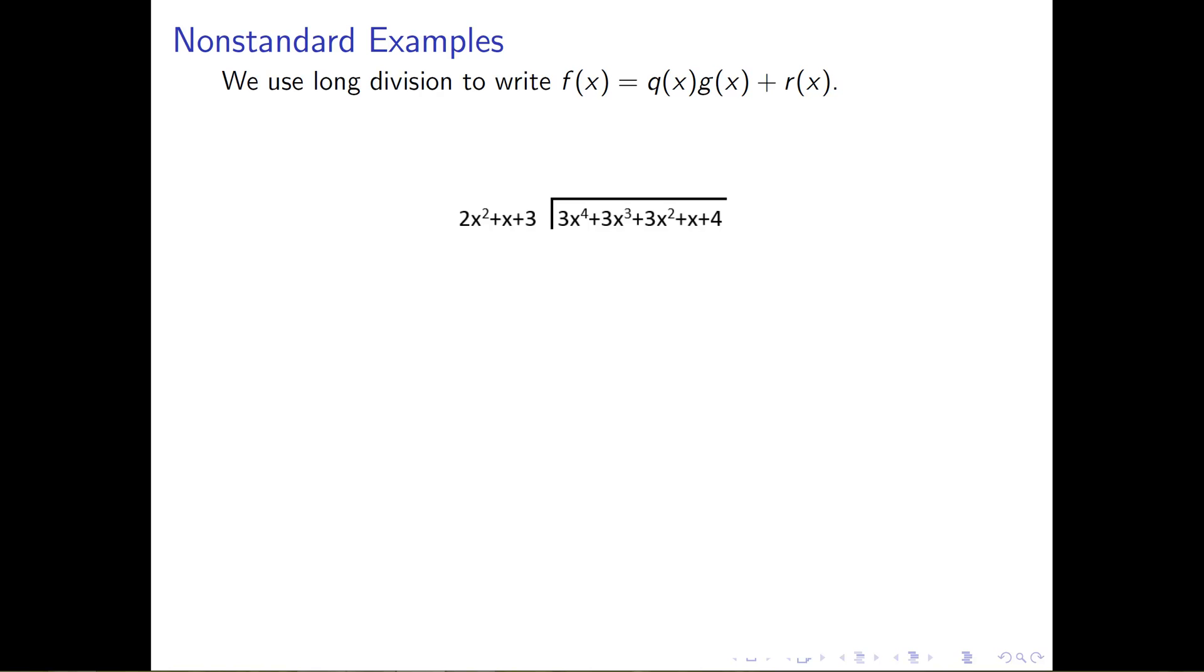Next, what I'd like to do is I'd like to use long division to write f(x) as q(x)g(x) + r(x). And in this example, instead of first doing the whole long division using real numbers and then later converting all of the coefficients in my result to Z mod 5, what I'm going to do is I'm going to do all of my computations in Z mod 5, and then I'm going to convert everything to Z mod 5 as I move along. So here's what I mean by this.